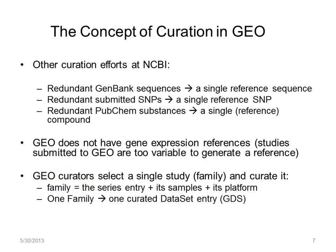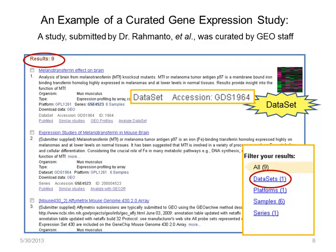This allows easier comparison of gene expression profiles in the whole study. Let's look at an example of a curated dataset. Here we have a web display of records from a curated study. Originally, Dr. R submitted eight records — six samples, one platform, and one series. And this family of records was curated into a dataset record, GDS-1964.